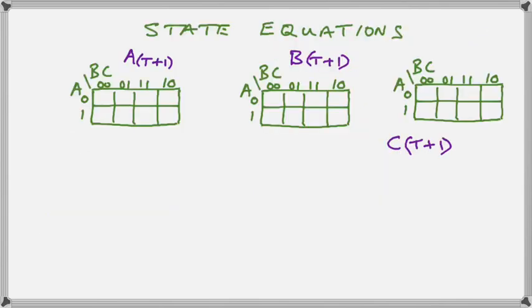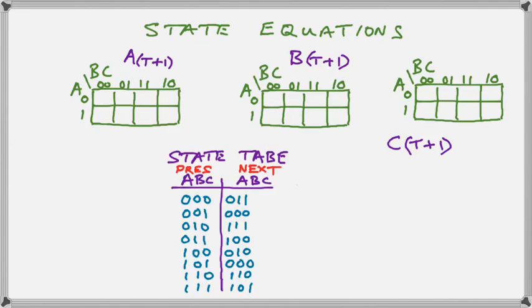So the last thing we have to do before we're done is to compute the state equations of the system. Remember the state equations are going to give us the next state of A, B, and C and that state is going to be based on the current present state. So now we are going to draw our completed state table. Notice now we have our state table with both present and next state and we've got all eight rows filled in because we now know what the unused states are going to do. So we've included the results of our state analysis to give us a complete state table.